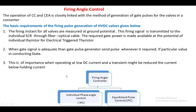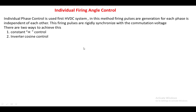The firing angle control is broadly divided into two types: individual phase angle control and equidistance pulse control. In individual phase angle control, the firing pulse generated for each phase is independent — that is why it is called individual phase angle control. The firing pulses are rigidly synchronized with the commutated voltage. There are two types under individual firing angle control: constant alpha control and inverse cosine control.